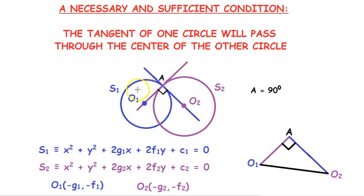So let's take these two circles S1 and S2. Here S1 is x² + y² + 2g₁x + 2f₁y + c₁ = 0, while S2 is x² + y² + 2g₂x + 2f₂y + c₂ = 0. Their centers will be O₁(-g₁, -f₁) and O₂(-g₂, -f₂).